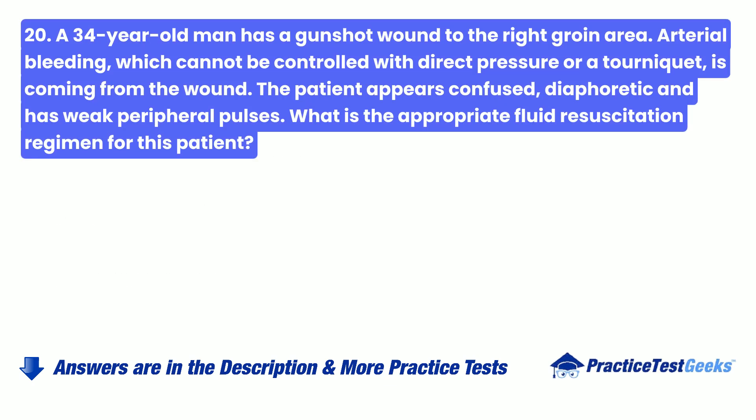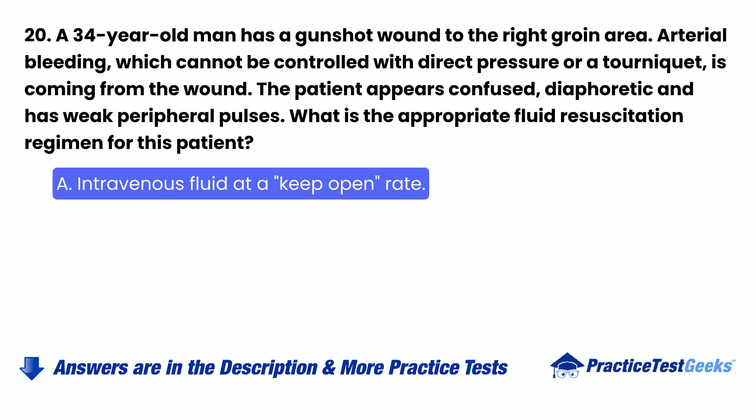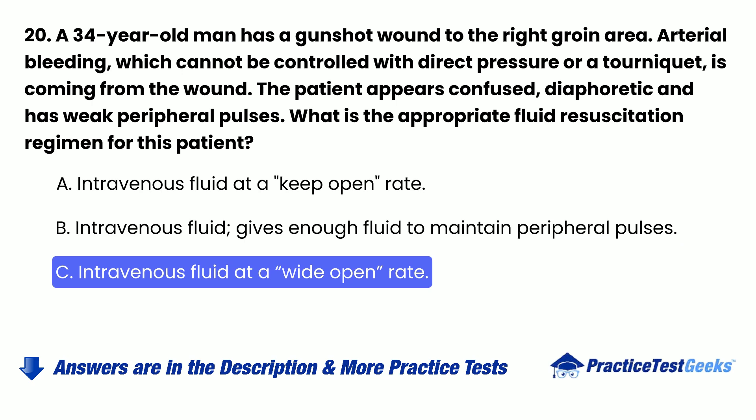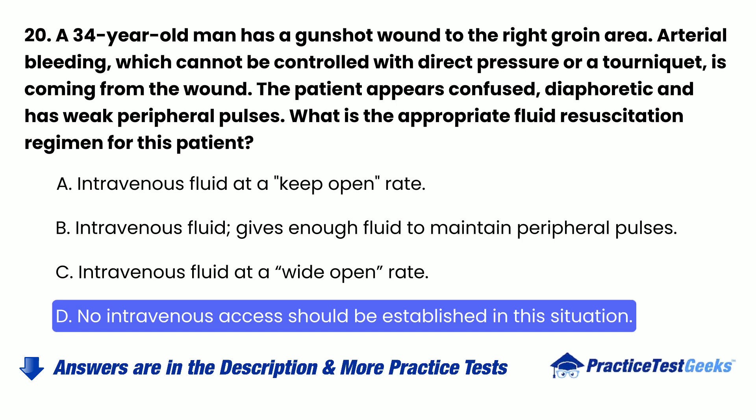Question 20: A 34-year-old man has a gunshot wound to the right groin area. Arterial bleeding, which cannot be controlled with direct pressure or a tourniquet, is coming from the wound. The patient appears confused, diaphoretic, and has weak peripheral pulses. What is the appropriate fluid resuscitation regimen for this patient? A. Intravenous fluid at a keep-open rate. B. Intravenous fluid — give enough fluid to maintain peripheral pulses. C. Intravenous fluid at a wide-open rate. D. No intravenous access should be established in this situation.